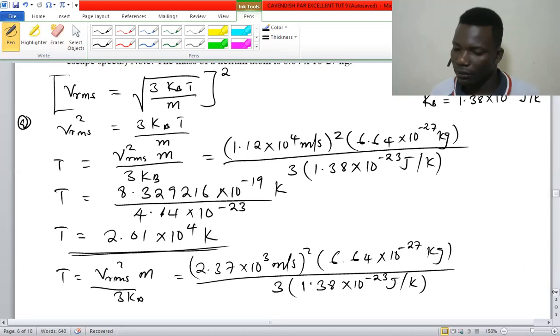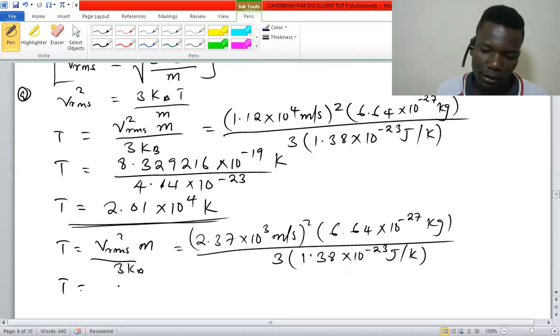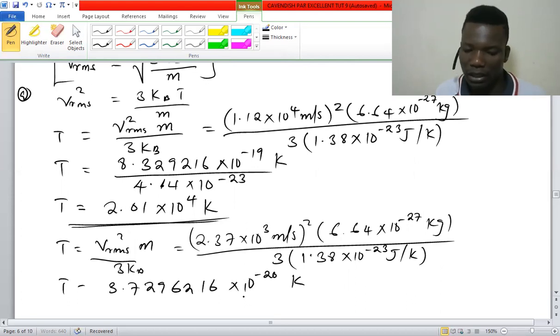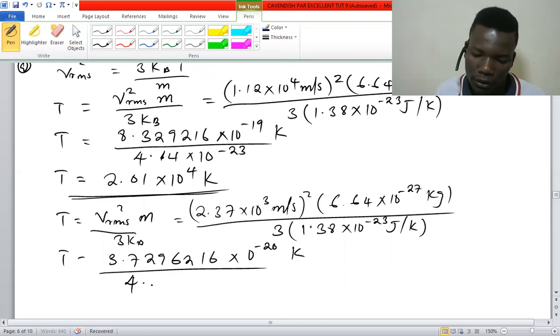So we have 2.37 × 10^3, which is giving us 3.72216 × 10^-20 kelvin.